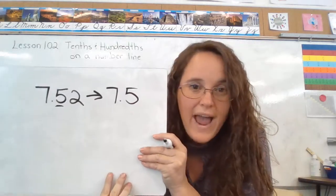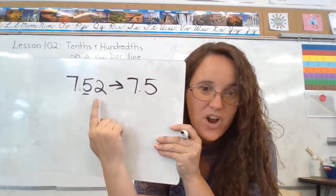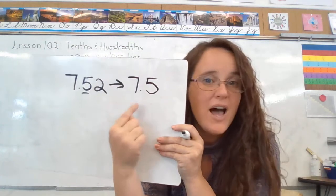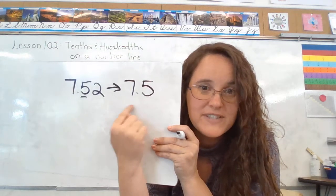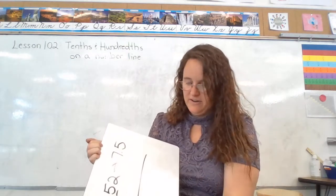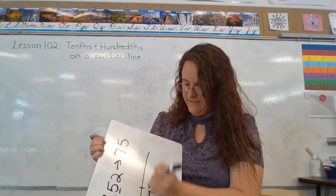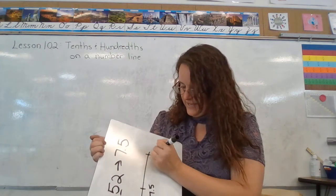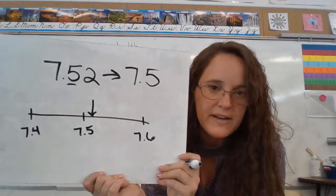When I say round down, what I'm doing is I'm getting rid of those two extra hundredths. I am not rounding down to 7 and 4 tenths, because then I would have skipped the 7 and 5 tenths. So let me do the number line here. 7 and 4 tenths, 7 and 5 tenths, 7 and 6 tenths,